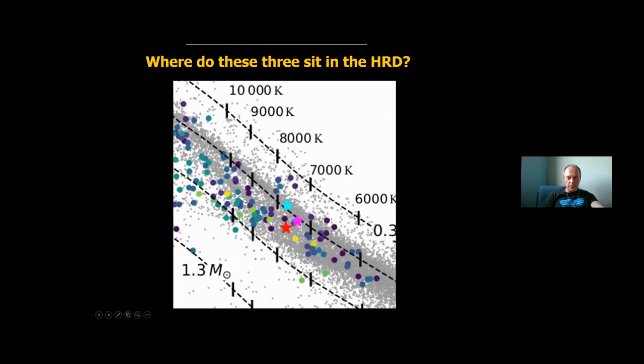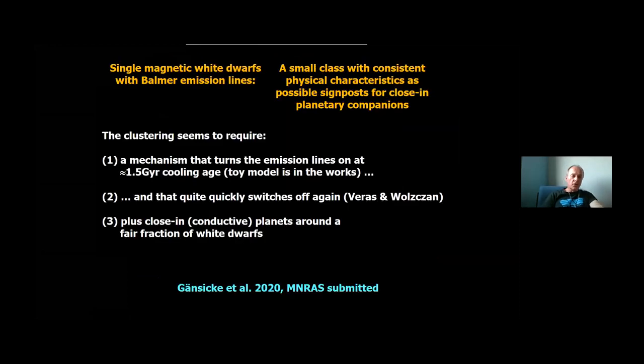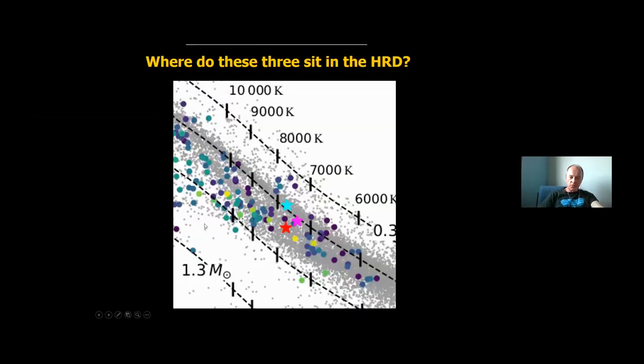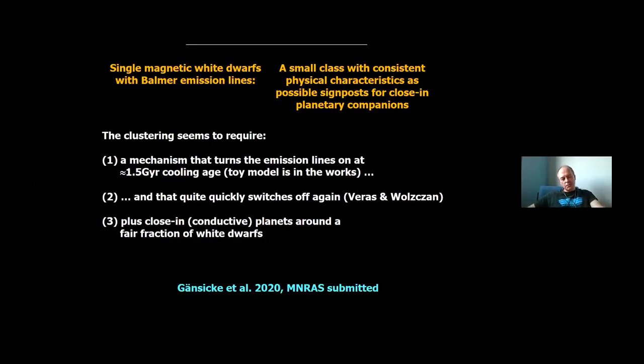And so that calls for some mechanism, which is kind of summarized here. It must be a mechanism that turns on only when the star reaches roughly about 1.5 gigayears of cooling age. And we have a toy model in the works for that. And it has also to quickly switch off again because we don't see emission lines in colder white dwarfs. And Dimitri will probably talk about that a bit more. And it requires a close-in conductive planet or planet core. And so all three stars are within 100 parsecs. And so that means if we find three stars fairly serendipitously that have conductive planet cores on over the period of a few days, they are very rare. And it's kind of quite exciting. They have another link to planets around white dwarfs. And I stop here.